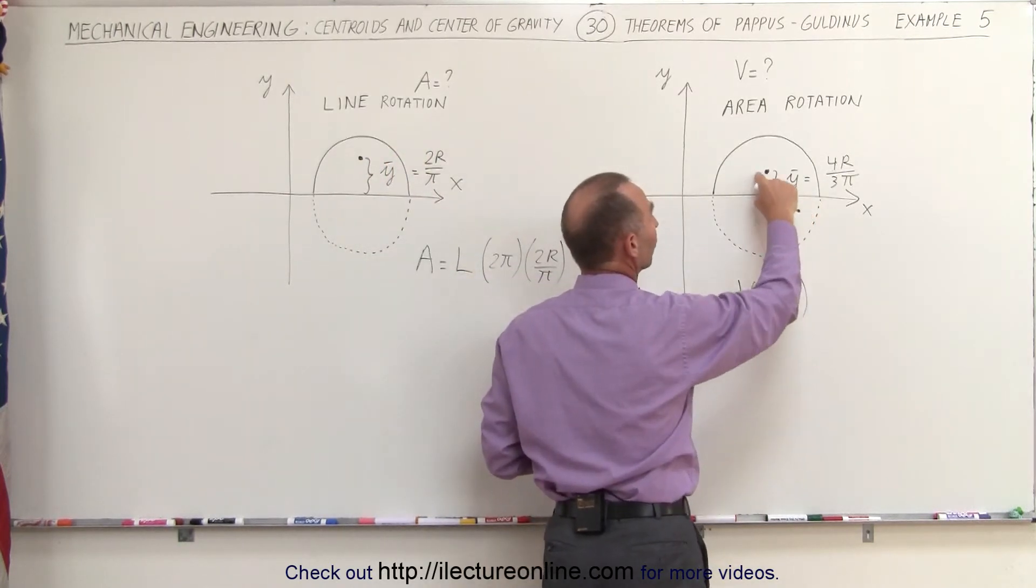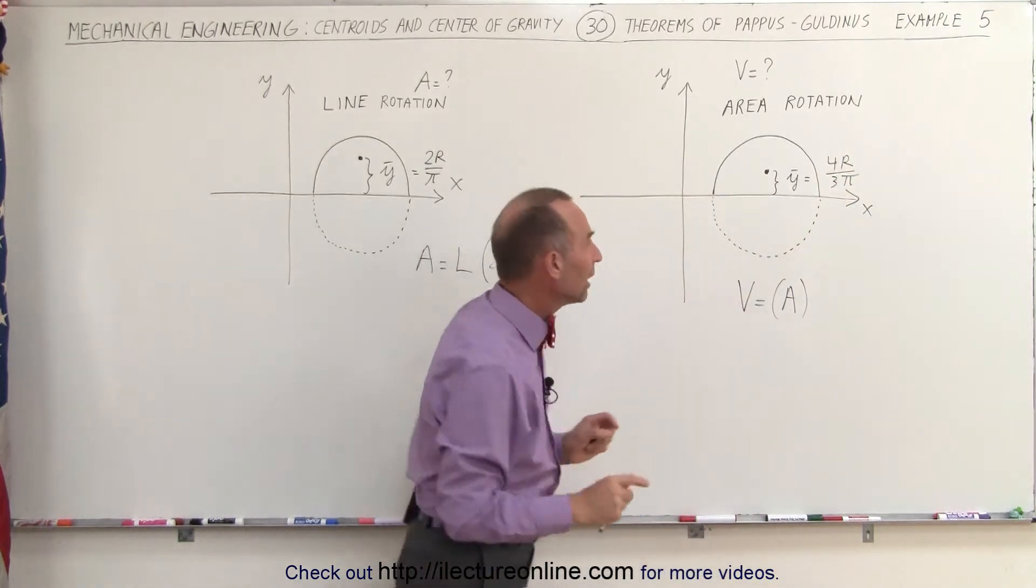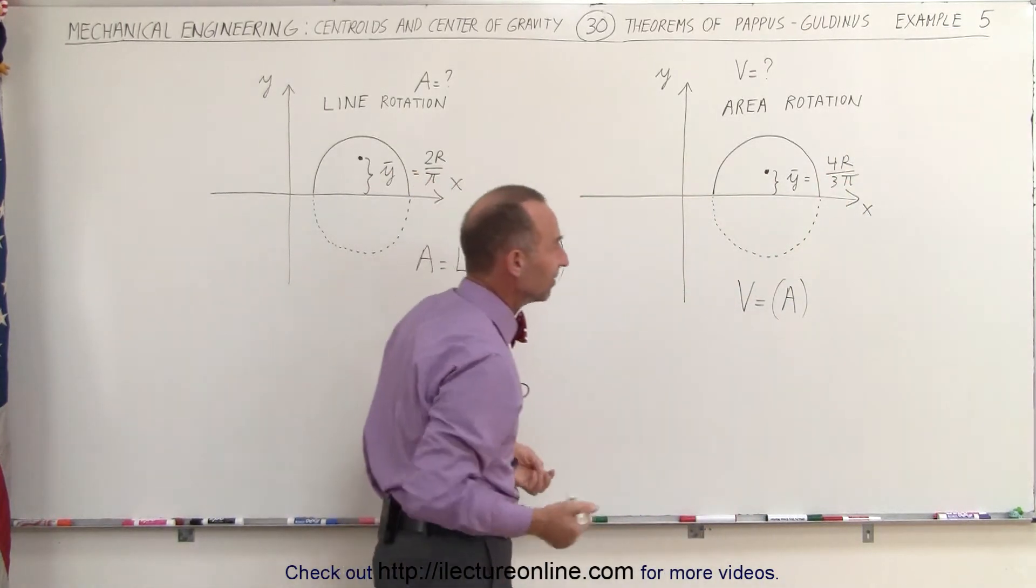In this case, the distance from the axis to the center of mass is 4r divided by 3π. So, that is different between a line segment and an area, which makes sense.